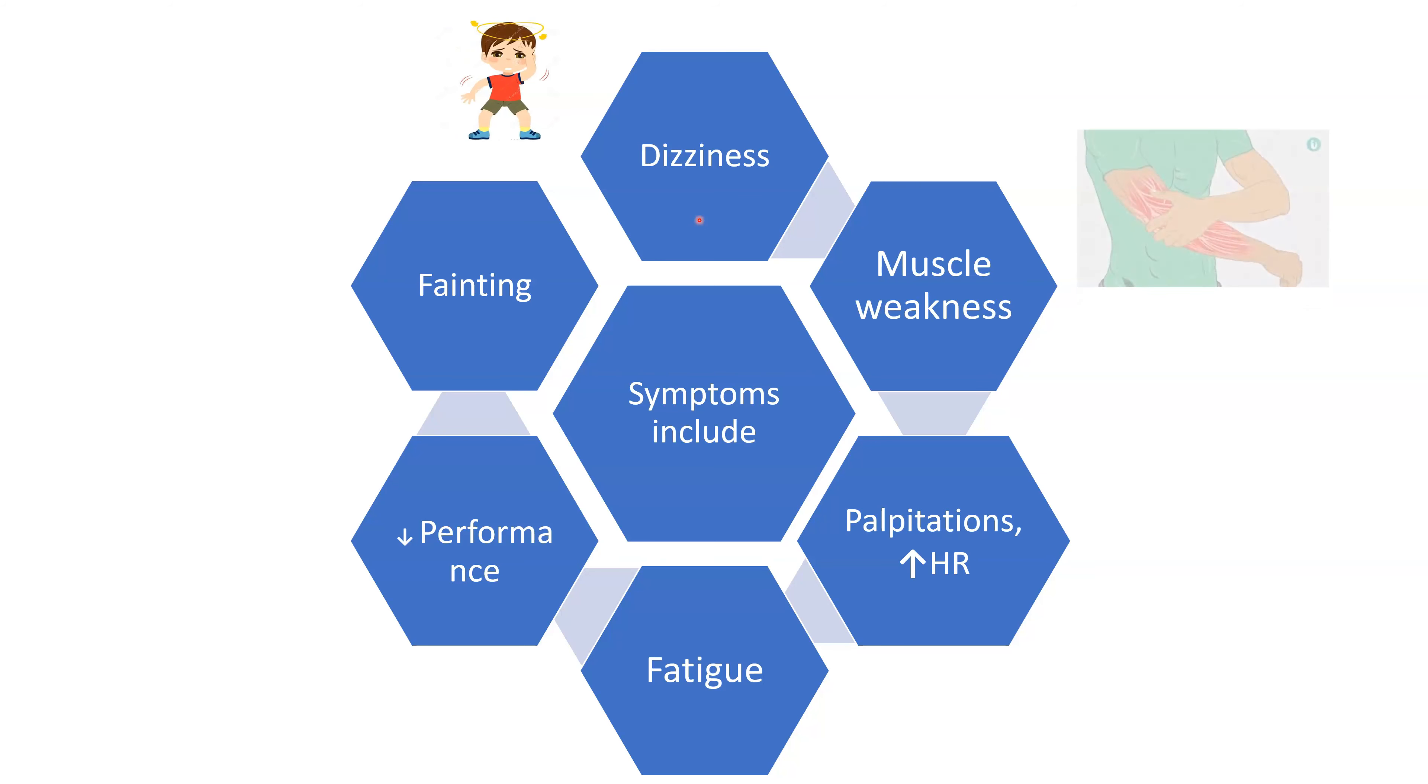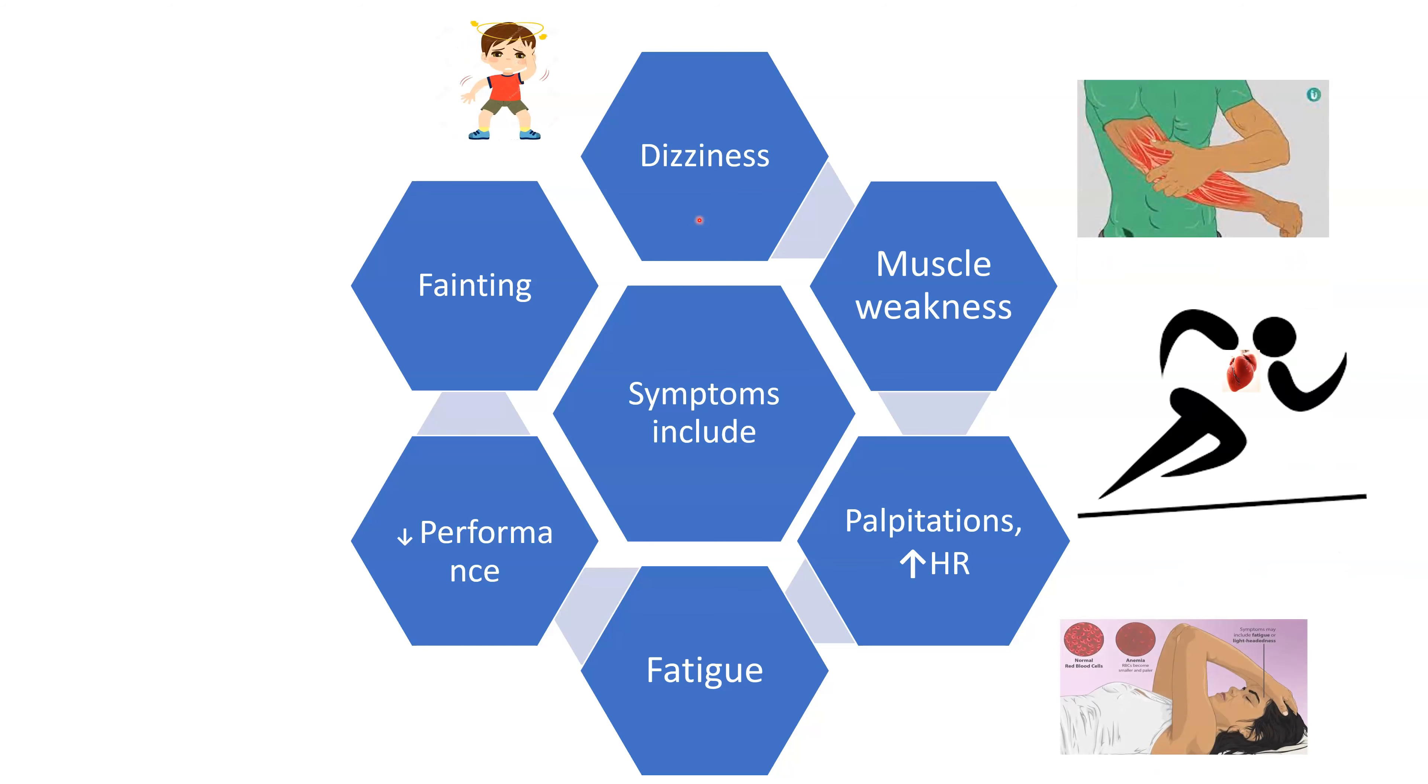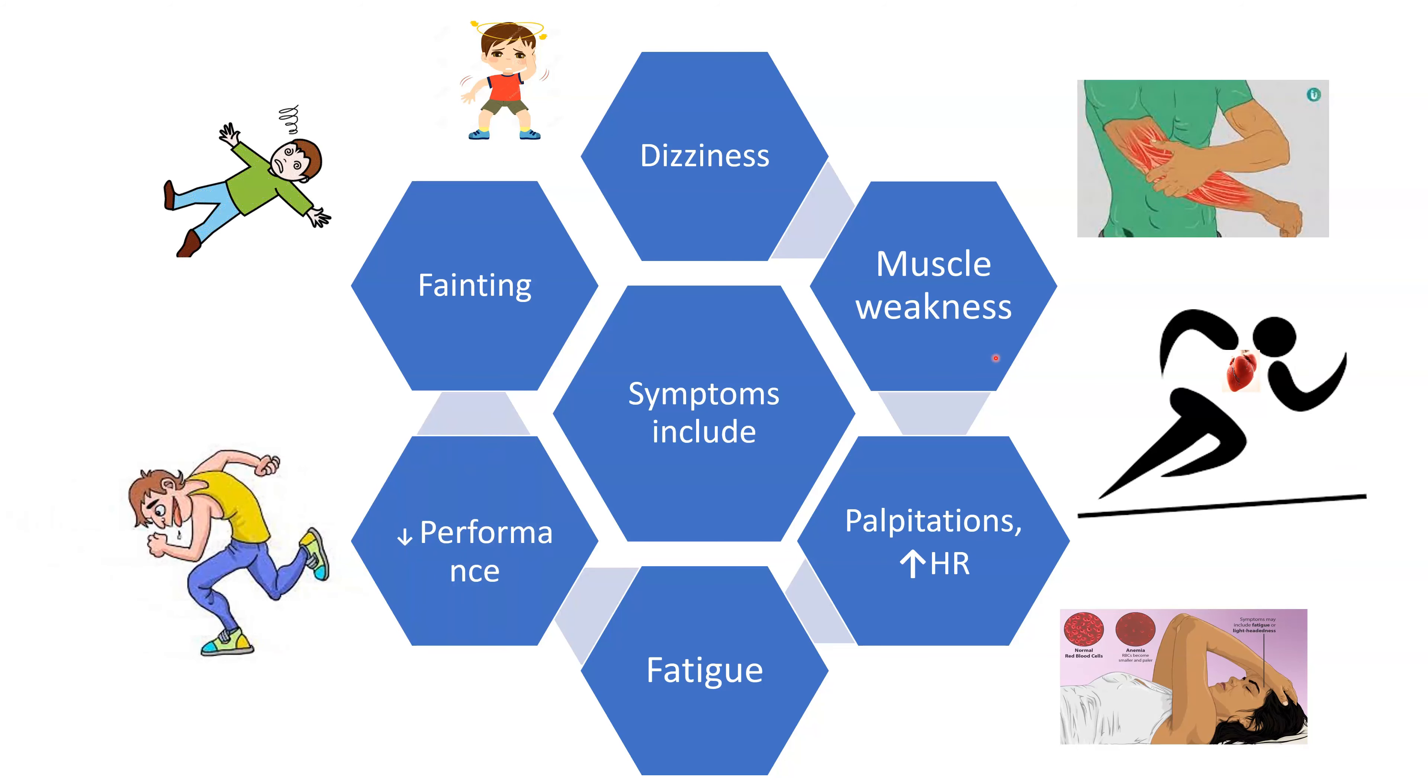Anemia in athletes may result in symptoms such as dizziness, muscle weakness, palpitations, increased fatigue, and decreased performance and recovery. Sometimes it may also lead to fainting.